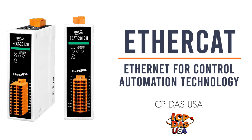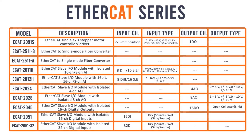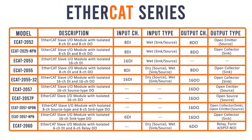EtherCAT — Ethernet for Control Automation Technology — from ICP-DAS USA. EtherCAT is an open, high-performance but low-cost industrial Ethernet-based fieldbus system. It was introduced in 2003 and has been an international standard since 2007.